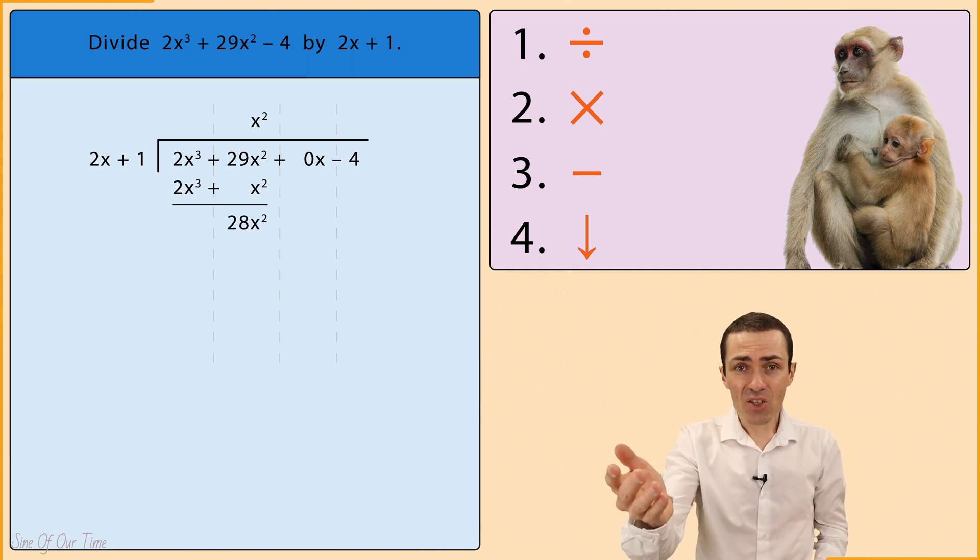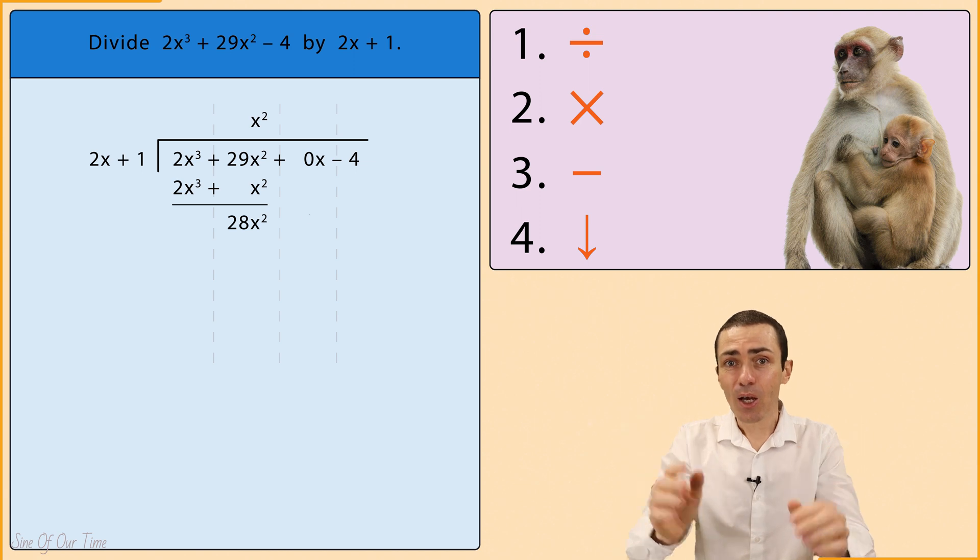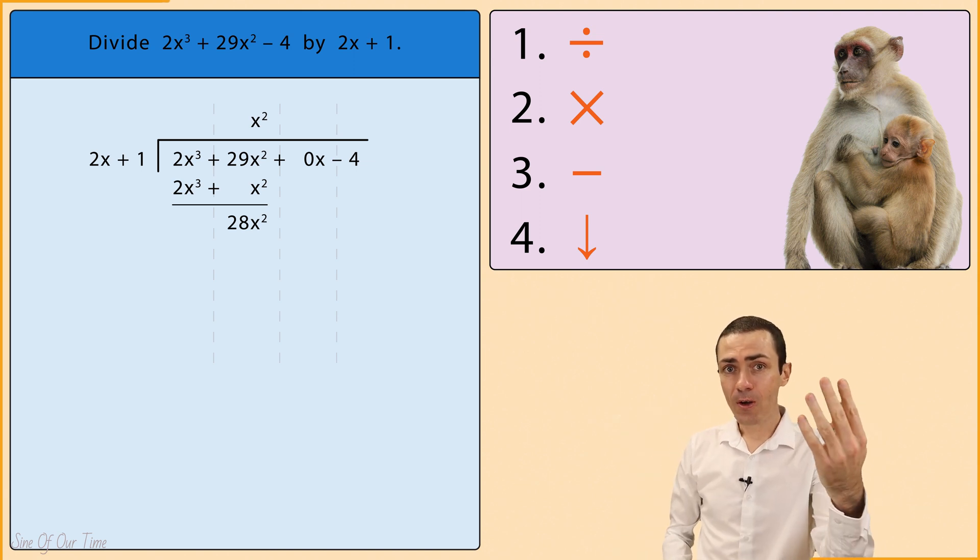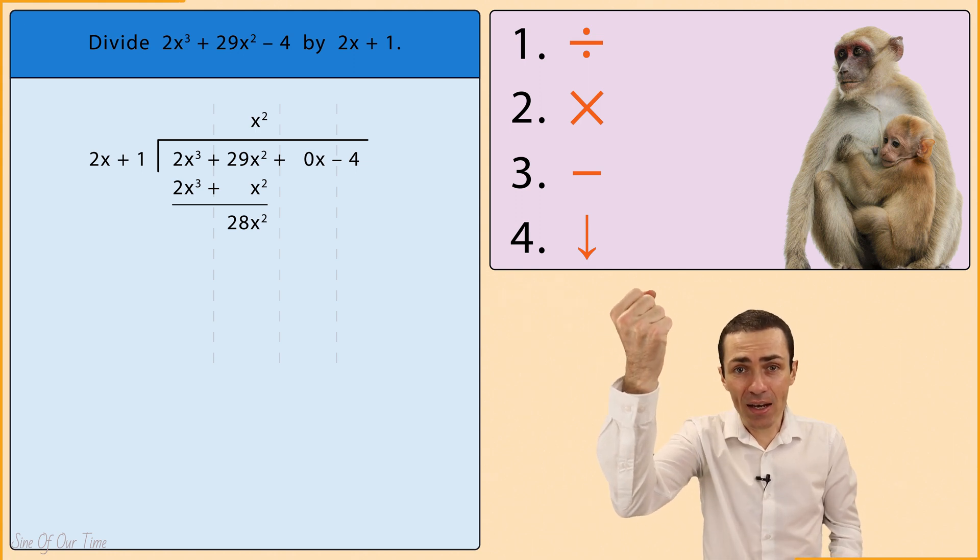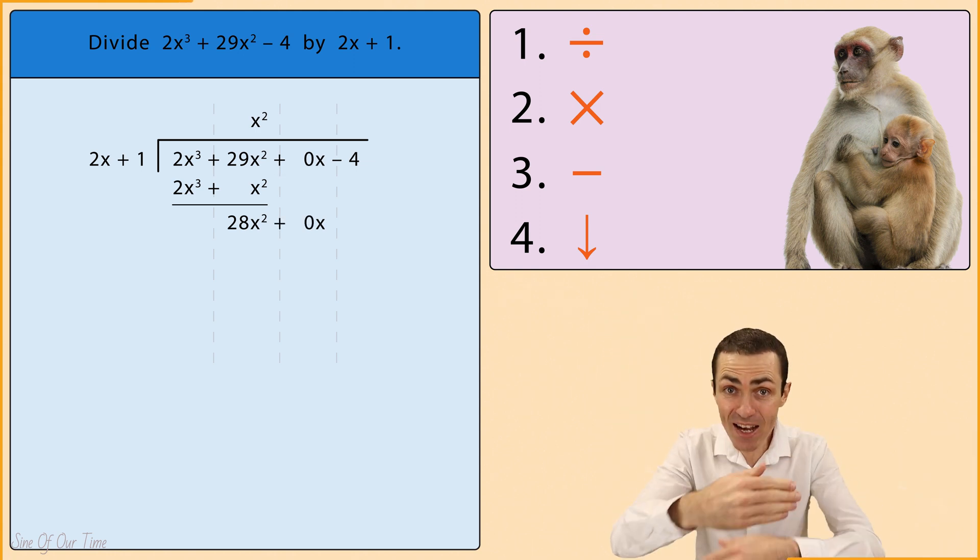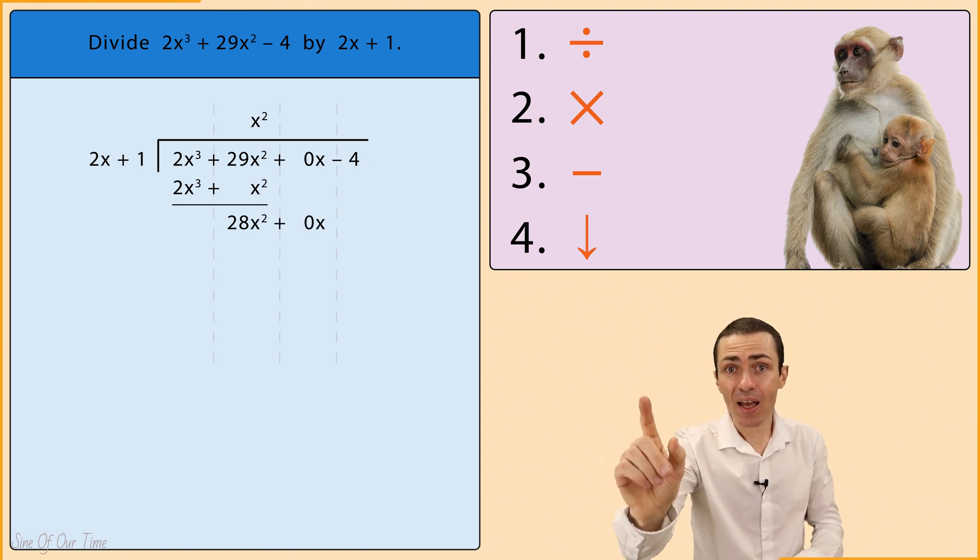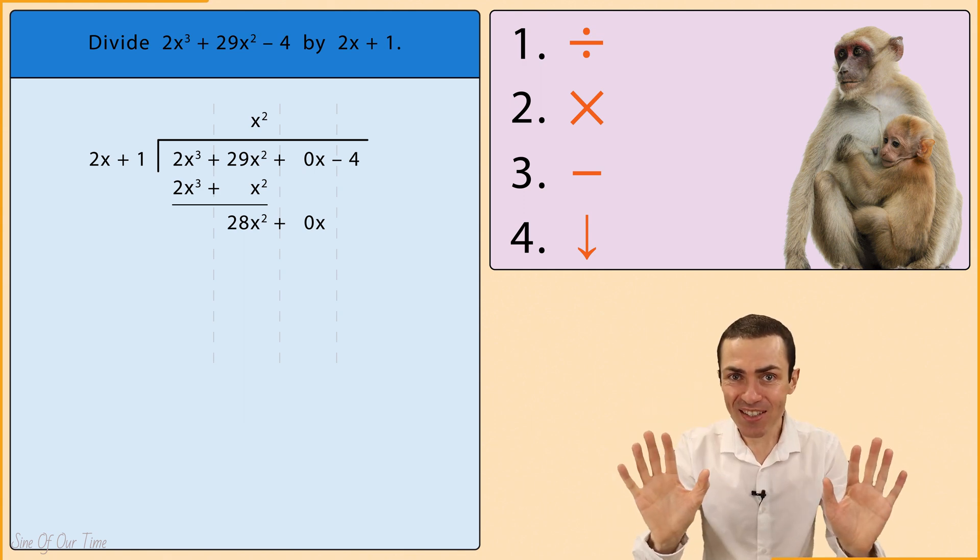To the right of that x squared, we notice it is blank, which brings us on to step 4: Bring down. We simply take that 0x and bring it down. We have now cycled through the steps once, but we are not done yet.